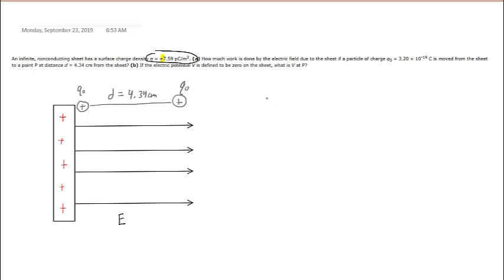Now once again, we know from previous chapters that the work done on a charge, or frankly on any object, is equal to the dot product between the force acting on that object and the displacement of that object.